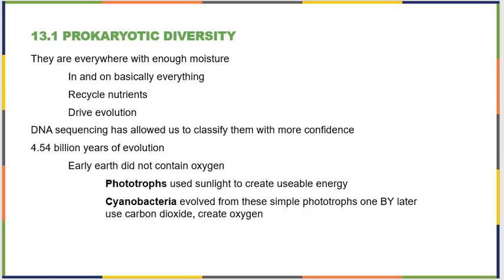Earth has undergone about 4.54 billion years of evolution, and in early earth, there wasn't any oxygen. Phototrophs were simply using sunlight to create usable energy without the Calvin cycle that we are used to. Cyanobacteria eventually evolved from these simple phototrophs about one billion years later, using carbon dioxide and slowly pumping our atmosphere full of oxygen.